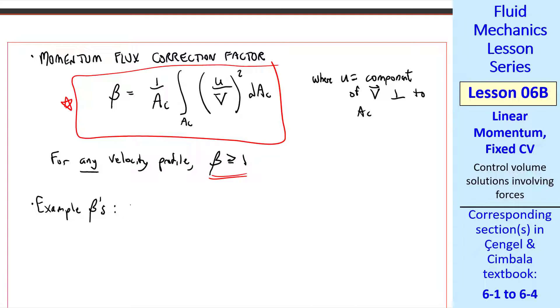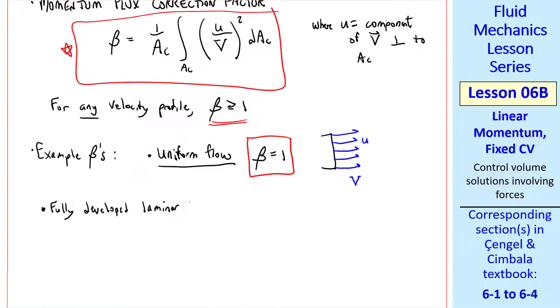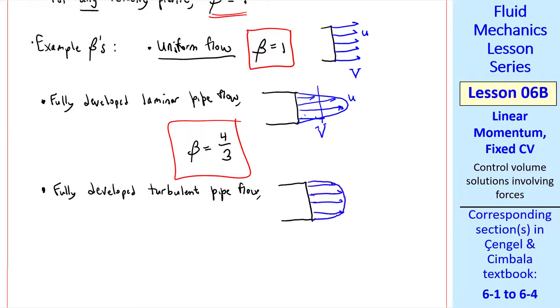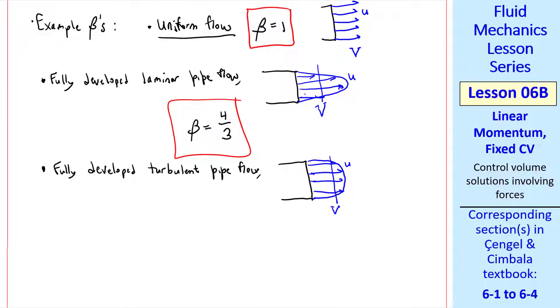Here are some example betas. The simplest case is uniform flow, which gives beta equal 1, since u is everywhere equal to v, as shown here. For fully developed laminar pipe flow, we have a parabolic velocity profile with average v and speed u that's not uniform. If you do the math with this equation, beta comes out to be 4/3. For fully developed turbulent pipe flow, the velocity profile looks something like that, and depending on the Reynolds number, beta ranges from about 1.01 to 1.04. We'll let beta equal 1.02 for fully developed turbulent pipe flow, unless otherwise specified.